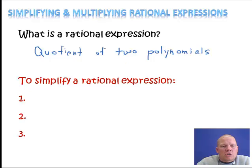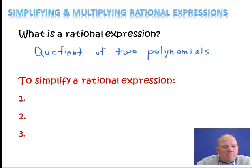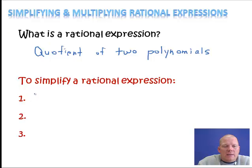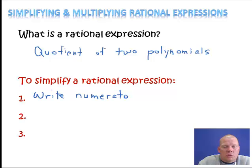So to simplify a rational expression, basically all we're going to do is division — division of polynomials. There are three steps we're going to take. The first step is to write the numerator in factored form. The numerator is the top number of our fraction, or quotient.